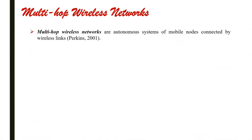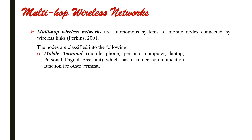According to Perkins in 2001, Multi-Hop Wireless Networks are autonomous systems of mobile nodes connected by wireless links. In this case, the nodes are classified into: number one, mobile terminals such as mobile phones, computers and laptops, and personal digital assistants, which have router communication functions for other terminals.